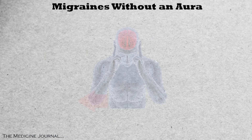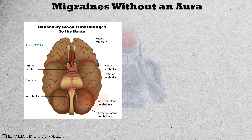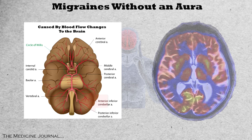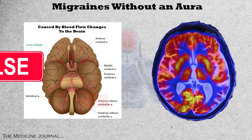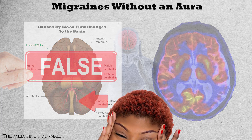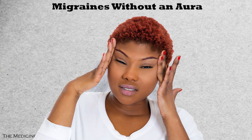Migraines without an aura were once thought to be blood flow related. Brain images of people with migraines have shown this to be, most likely, false. The only blood flow changes to any specific brain area have been to the brain stem, and it has been suggested that these changes are more likely the result of pain, and not the cause itself.